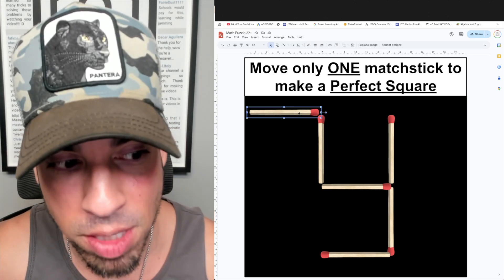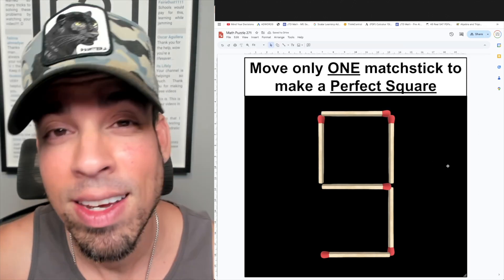And now if you think along these lines, we can turn this into that perfect square of nine like so. We can take this matchstick up top and place it right there, and now we have a nine. That's how you do it. Done.